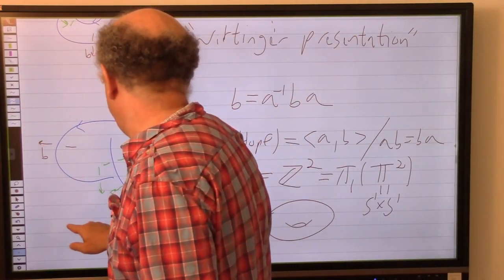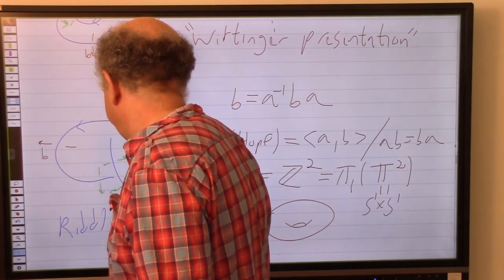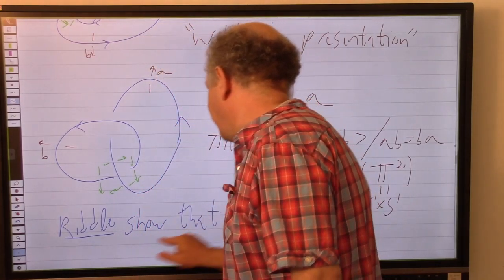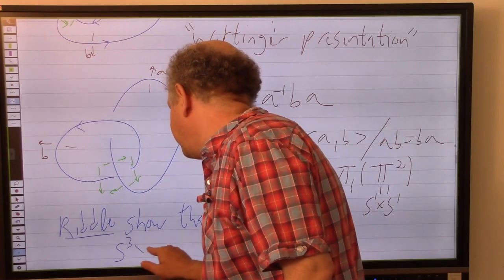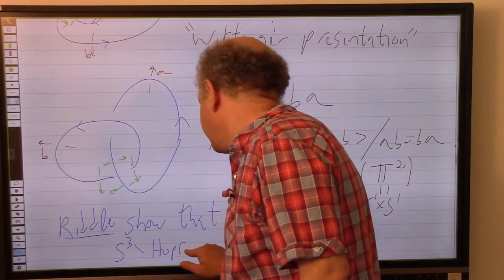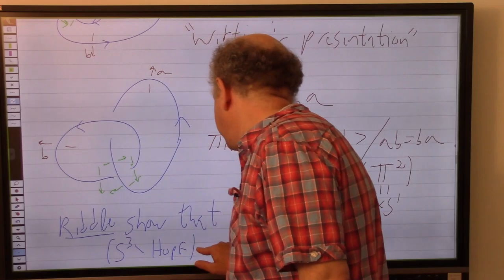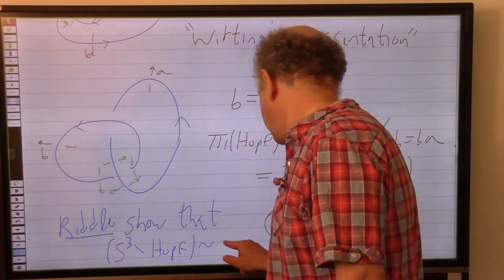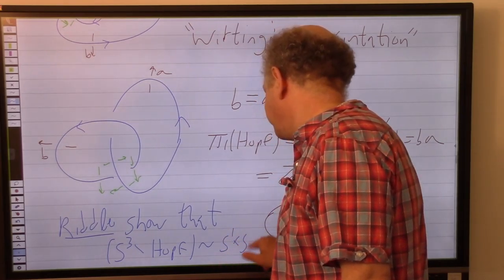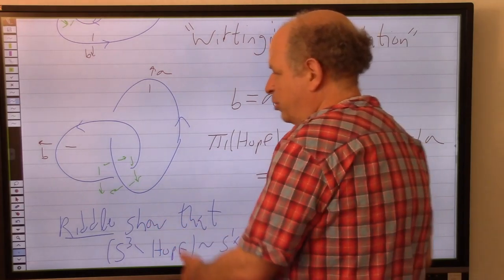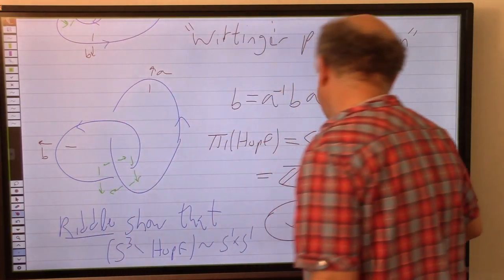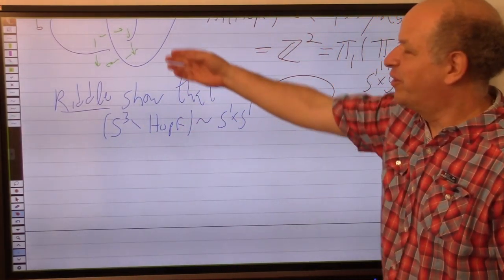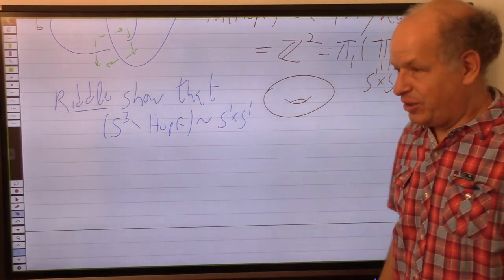So hence my next riddle: show that S³ minus the Hopf link has a deformation retract to the torus. It should be easy, even though it doesn't look like it.